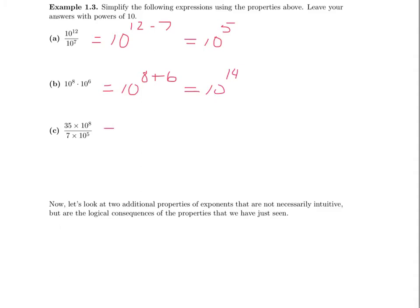Let's look at part C. In this problem, you may find it helpful to split this one fraction into two fractions so that we can isolate the powers of 10 by themselves. In this case, we could rewrite this as 35 over 7 times 10 to the 8 over 10 to the 5th. Now we simplify each fraction separately. 35 over 7 is 5. 10 to the 8 divided by 10 to the 5 requires us to subtract the exponents: 8 take away 5 is 3, so we're left with 10 cubed. This is the simplified form.